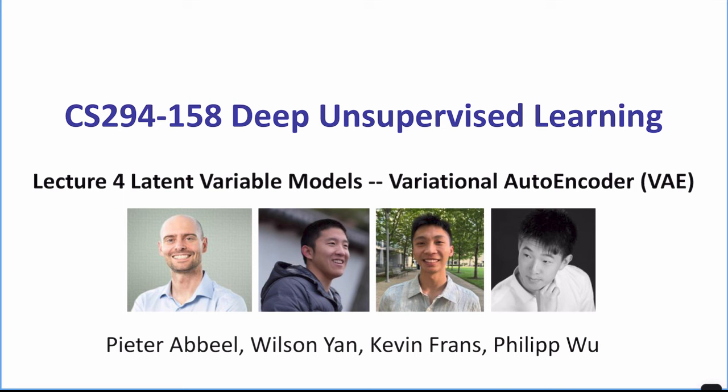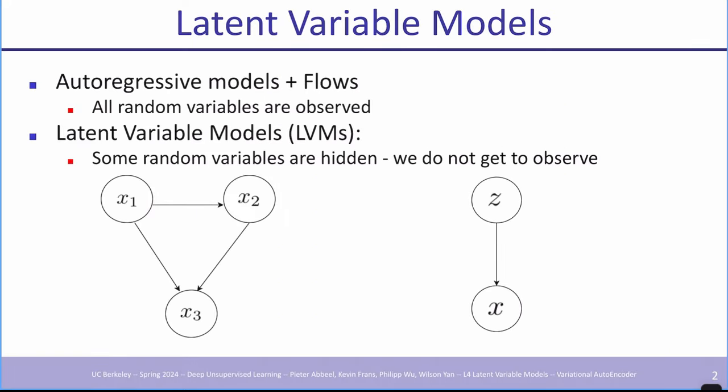Today we're going to cover latent variable models. Just to give a bit of context: we've looked at autoregressive models, we've looked at flows — in which case, in some sense, all the random variables were observed. We were very directly modeling the distribution over x. And that will be different now.